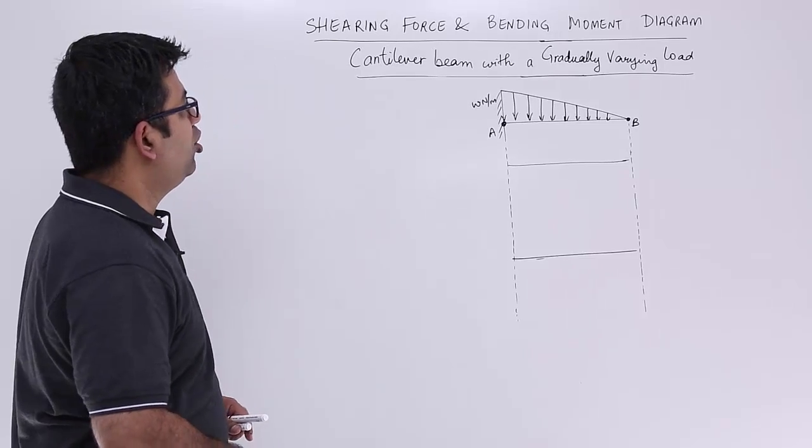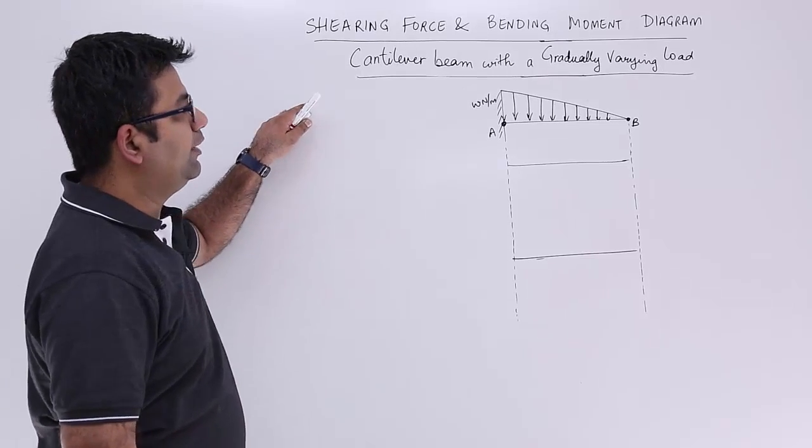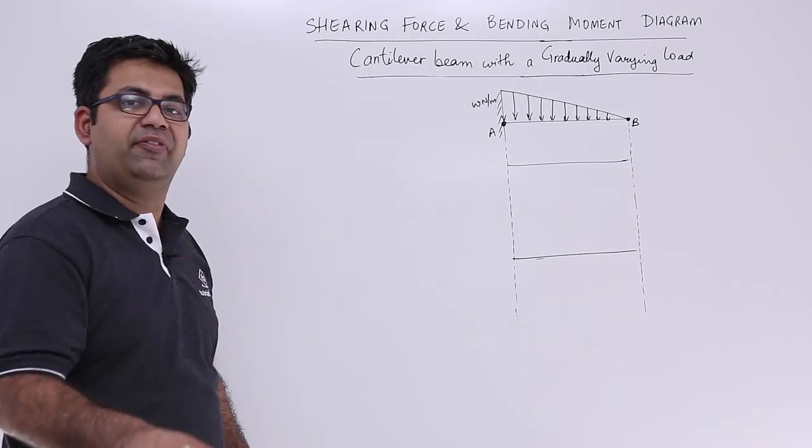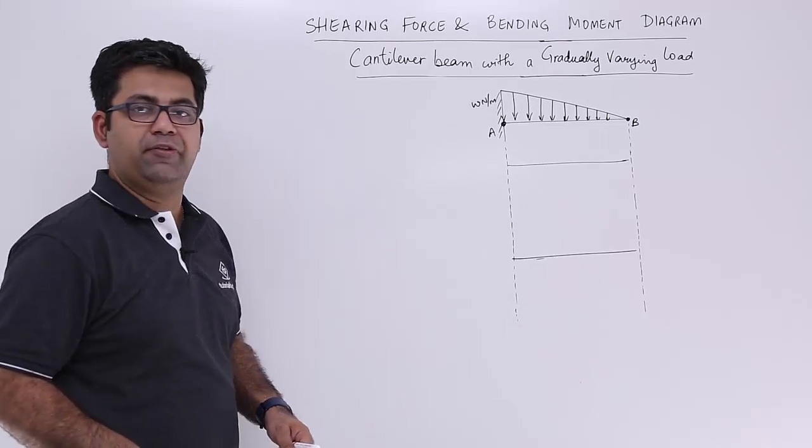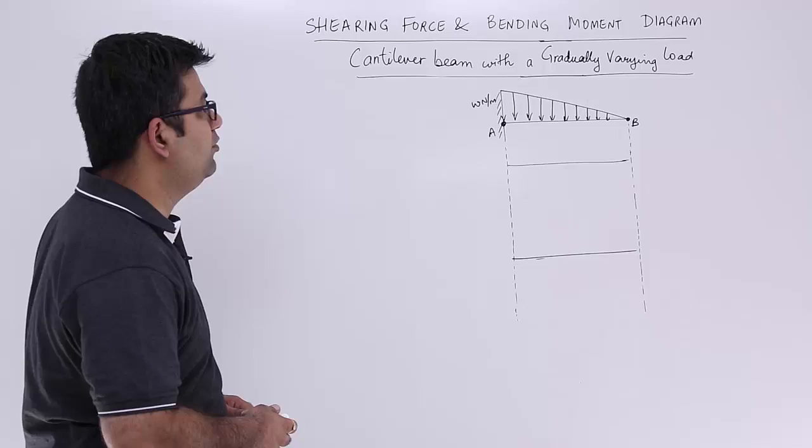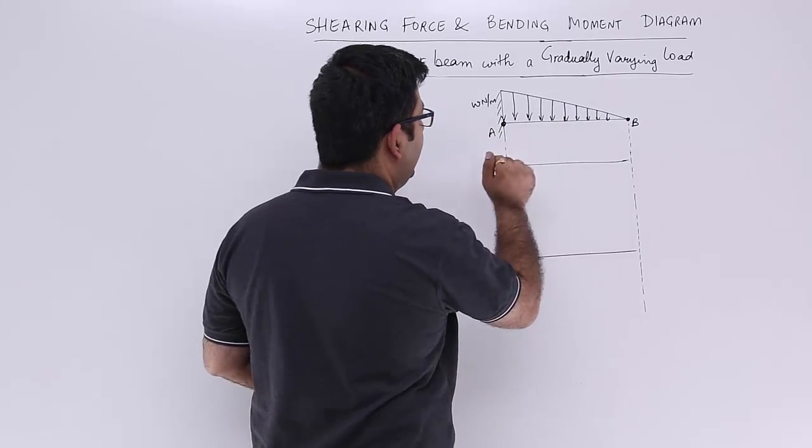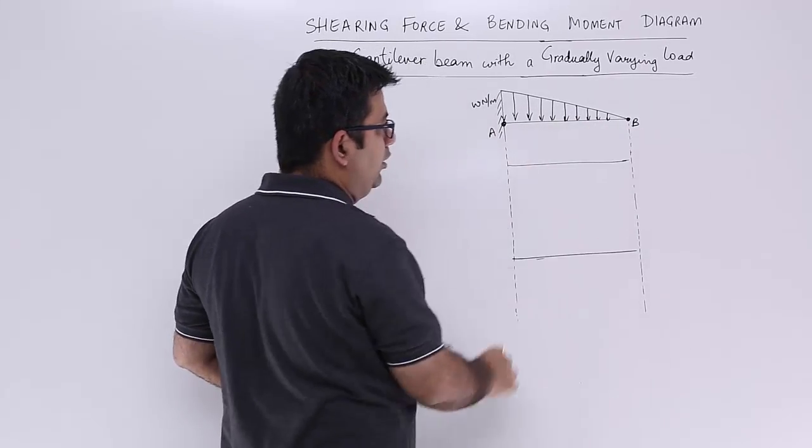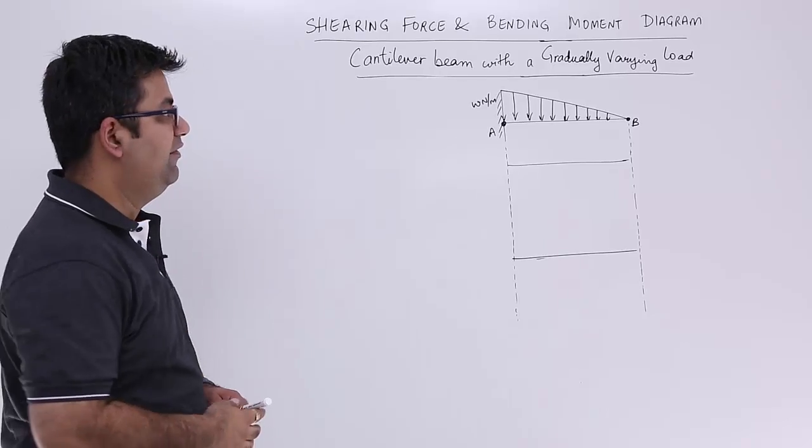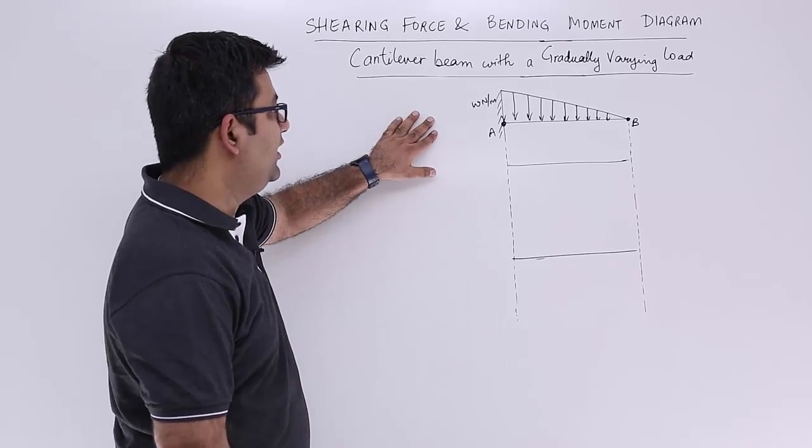Now let's come to the part where we talk about the cantilever beam with a gradually varying load and we'll draw the SFD and BMD for such a configuration. This is how it looks like: you have a cantilever beam AB and you have a gradually varying load which looks like this with the load at W at point A and it goes to 0 at point B.